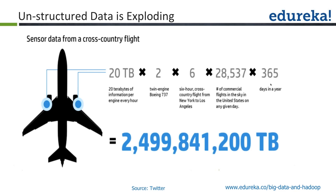Let's understand what is unstructured data and what is actually big data. In this slide, what you can see is a huge amount of data getting generated from a cross-country flight. In 365 days, it amounts to around 2.5 billion terabytes of data. This qualifies as big data because it is huge, it is getting generated at a very fast speed, and it comes from various varieties of data — largely unstructured. This is a typical example of big data.